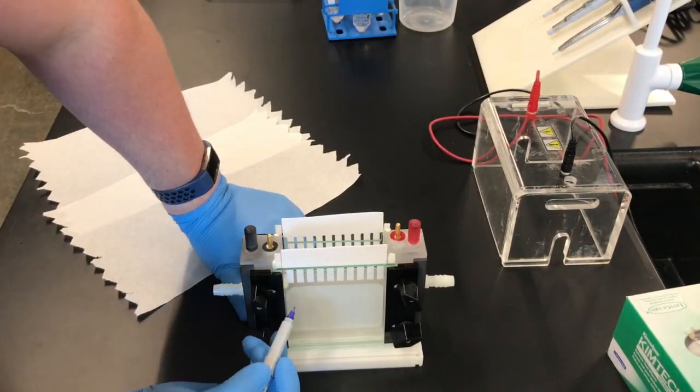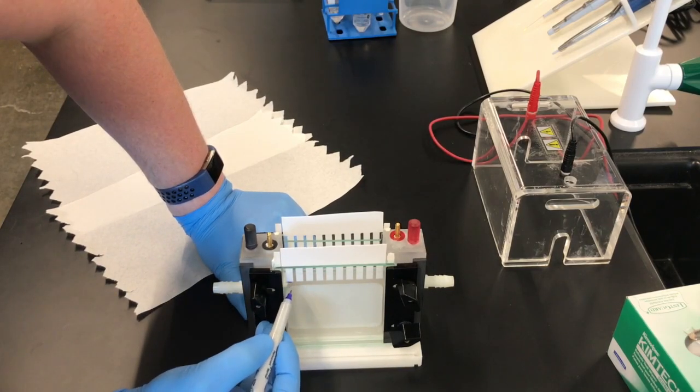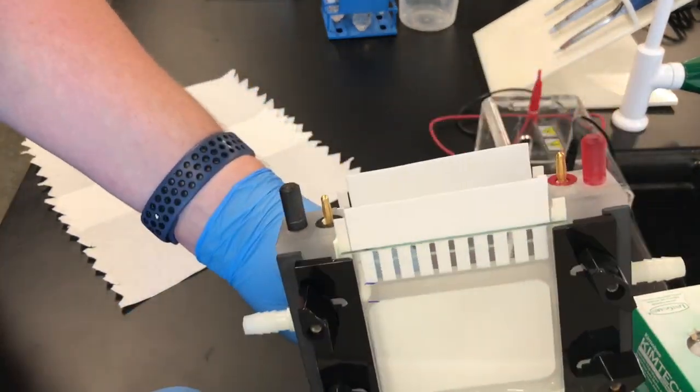Once the combs are in, use a marker to mark the bottom of one of the wells as well as another mark about an inch or so below it.